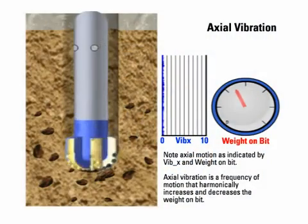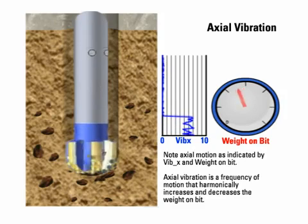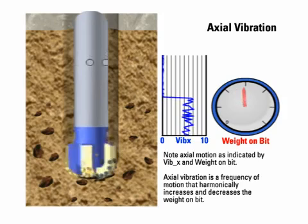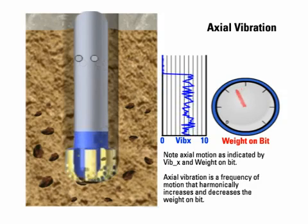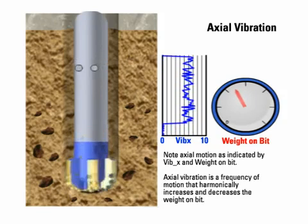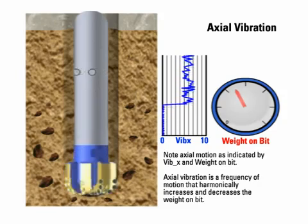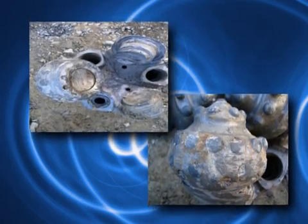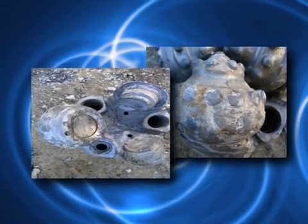Axial shocks arise from movement of the drill string along the axis of the drill string. In the most severe form, it is sometimes referred to as bit hopping or bit bounce. However, in most cases, there is not enough force to allow the drill string to come off bottom and bounce. Instead, shocks are transmitted up the drill string, which harmonically increases and decreases the weight on bit. The consequences of axial shocks could be broken bit teeth, damaged downhole tools, and slowed ROP.